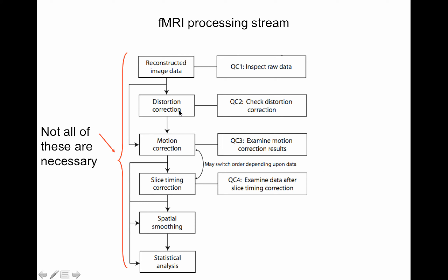Here's the general fMRI processing stream — not all of these steps are necessary, though all the quality control steps are. You reconstruct your image data, then you can do distortion correction or skip it and go right to motion correction — which you actually can't skip. Slice timing correction you could do or skip, and go right to spatial smoothing. For a standard task fMRI you're going to be spatially smoothing, and then last you run your statistical analysis.